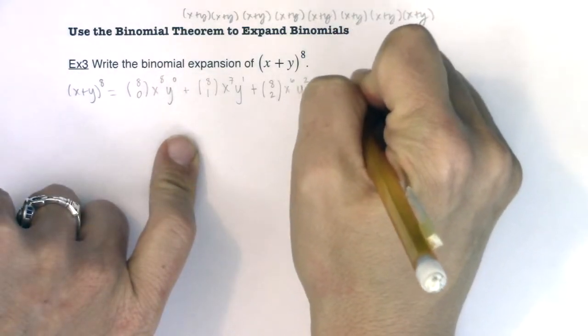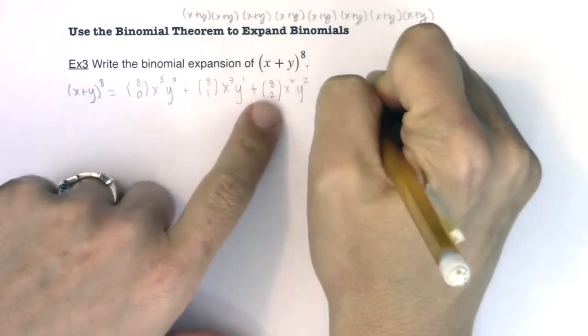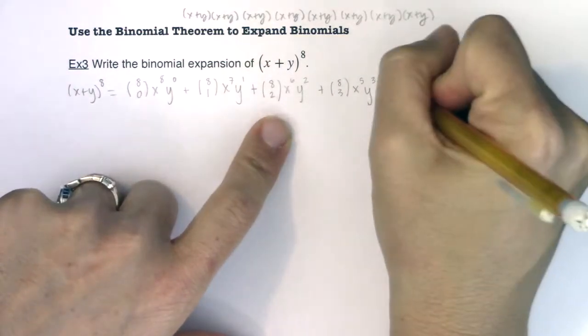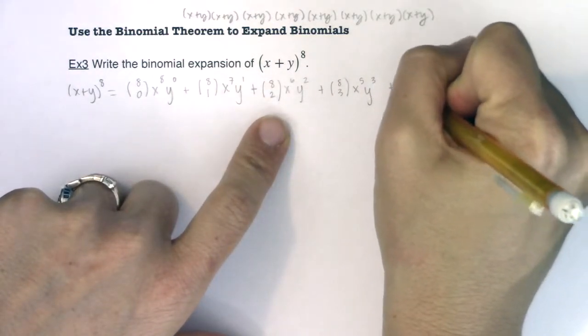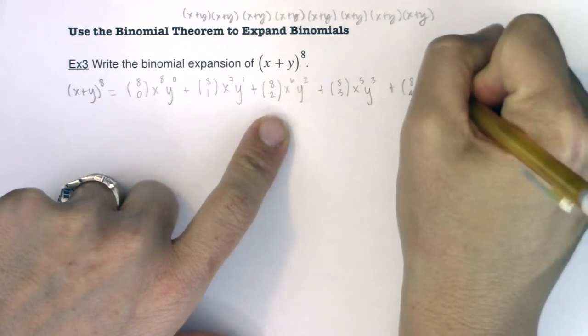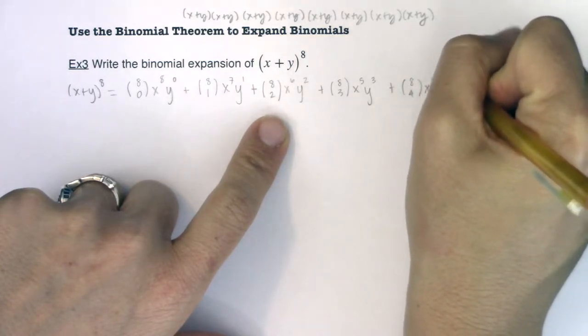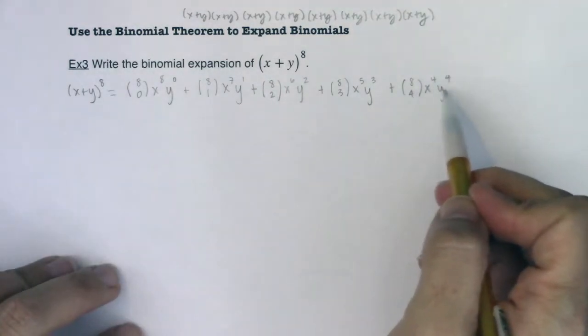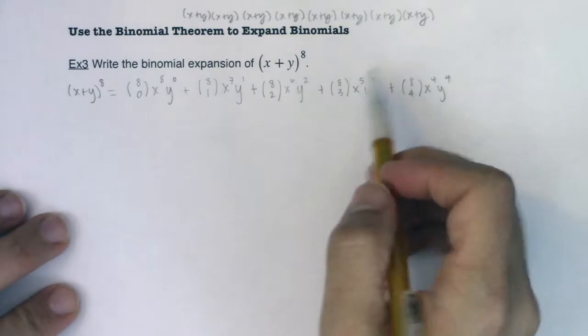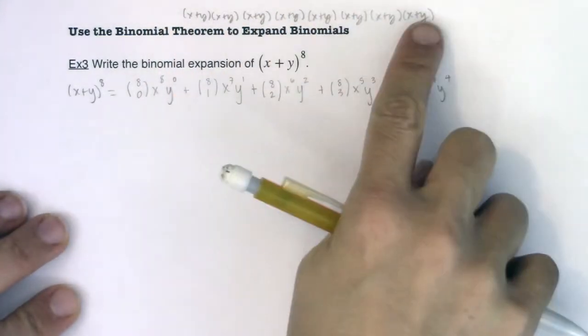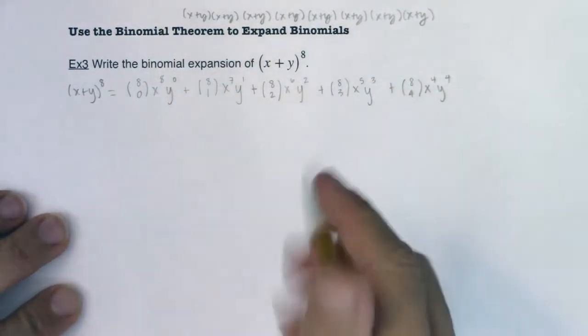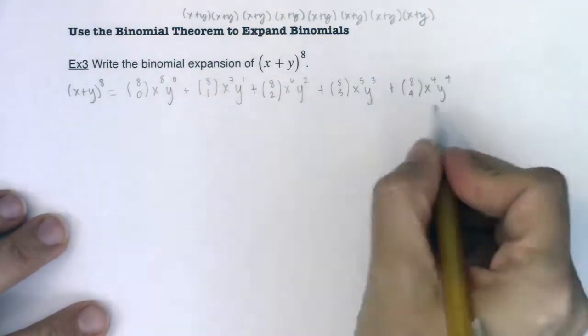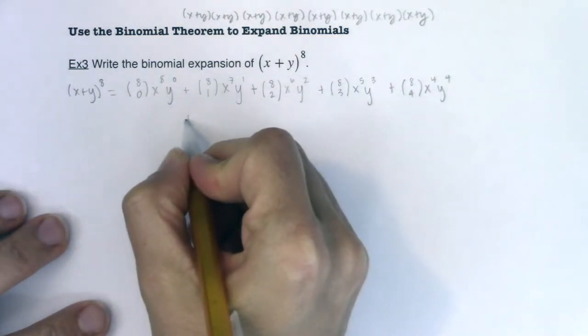So we're going to also go eight choose three. Lower the power on x, raise the power on y. And then we'll do eight choose four, lower the power on x, raise the power on y. I always do just a little quick check to make sure my exponents are adding up to eight, because these can get pretty convoluted. I still argue it's easier than doing this, but even this has got a lot of algebra in it. So let's see how we're doing. Eight choose four, I still got to go.